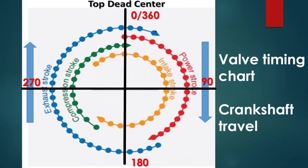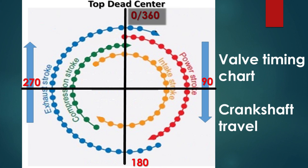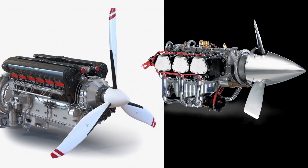We will utilize a valve timing chart to show crankshaft travel and valve movement. Quadrants of 90 degrees, 180 degrees, 270 degrees, and full circle travel of 360 degrees have been added to the valve timing chart to show movement. The timing of the ignition and the valve events vary considerably in different engines.